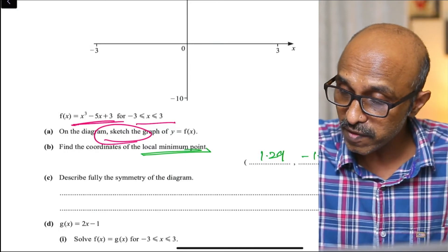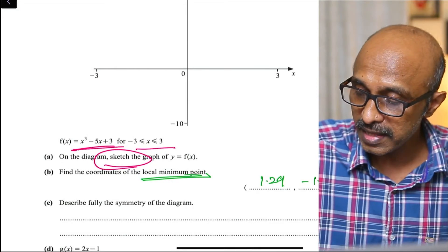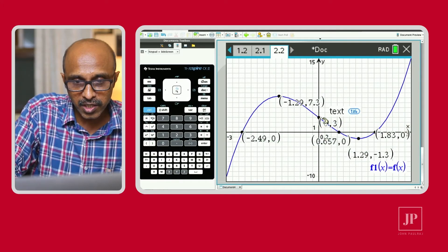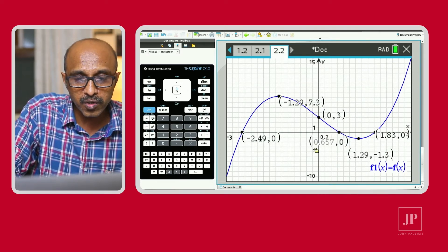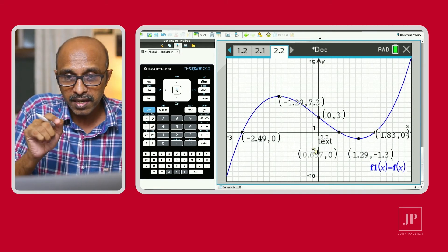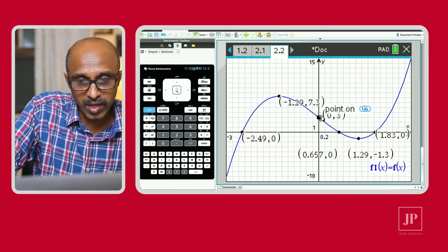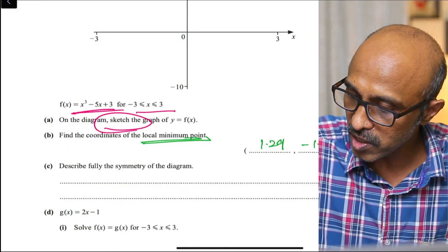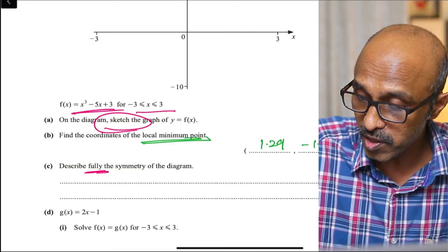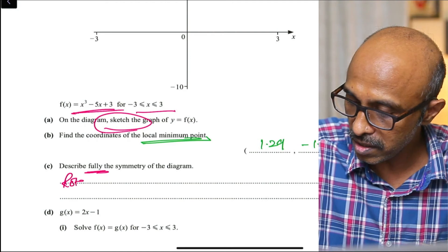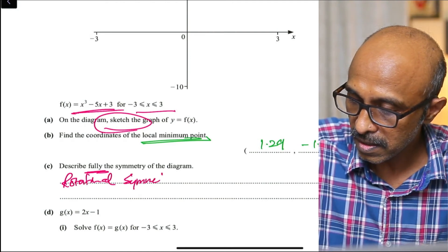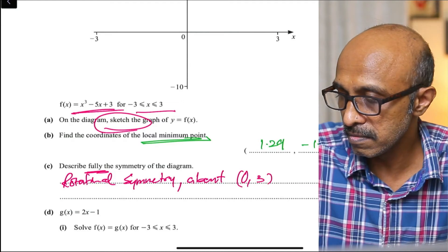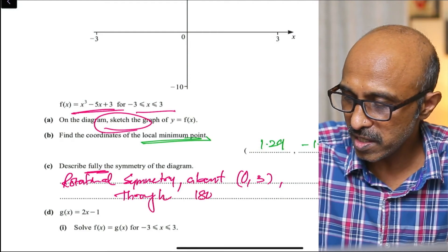Describe fully the symmetry of the diagram. The cubic graph has rotational symmetry about the origin for the parent function, but here the graph is a transformed cubic — the y-intercept is now (0, 3), so the center of rotation has shifted. When the question says 'describe fully,' give as many details as possible. You should write: rotational symmetry about (0, 3) through 180 degrees. Whether you say 180 degrees or negative 180 degrees, it is the same thing.